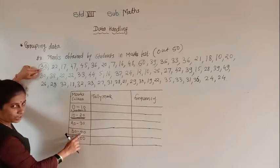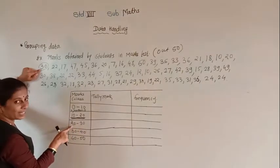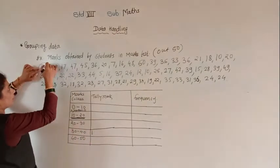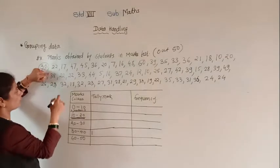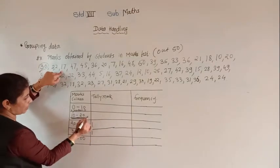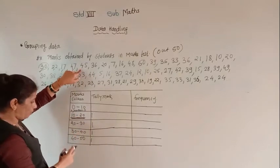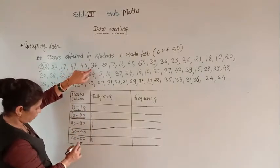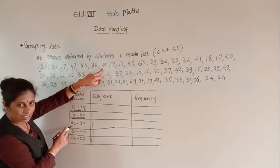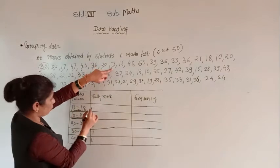A student who got 30 marks goes in the 30 to 40 class, not 20 to 30, because 20 to 30 requires marks less than 30. So 30 goes in 30 to 40. Then: 22 goes in 20 to 30, 17 goes in 10 to 20, 47 goes in 40 to 50, 45 also in 40 to 50, 36 in 30 to 40, 20 in 20 to 30, and 7 in 0 to 10.